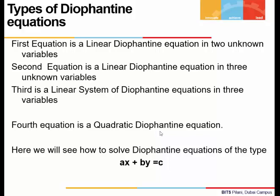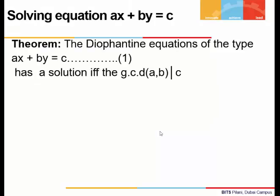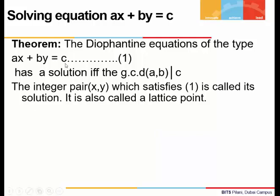Let's see how we solve an equation of the type ax plus by is equal to c — a linear Diophantine equation in two unknowns x and y. First we check whether the equation has a solution. We find the GCD of the coefficients a and b. If the GCD of a and b divides c, then the solution exists, and if it exists there are infinite solutions.